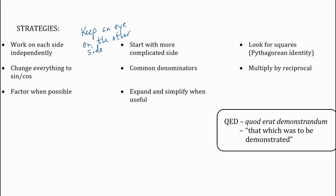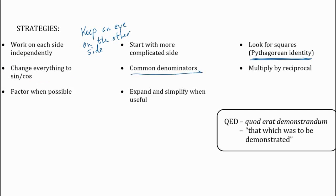Whenever you see squares, you have the opportunity to use the Pythagorean identity (sine squared theta plus cosine squared theta equals one) — but only if it's squared. If you have sine squared theta or cosine squared theta, you can replace it. Generally speaking, a really big strategy: change everything to sine and cosine. If you have reciprocal ratios like cosecant and secant, or tangent or cotangent, very often we change everything in terms of sine and cosine. Another big one: common denominators — when we have fractions, if there's nothing else to do, try getting a common denominator. It's amazing how things become clearer when you do that.